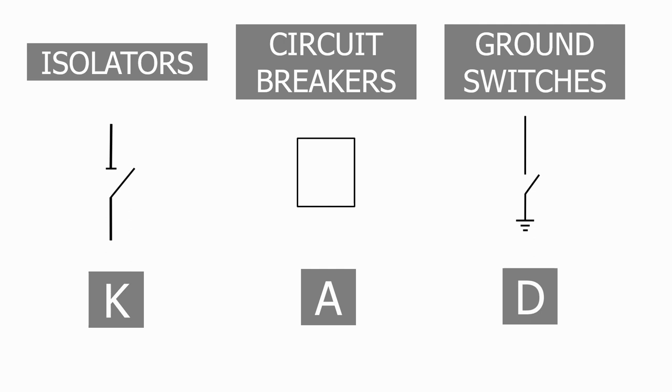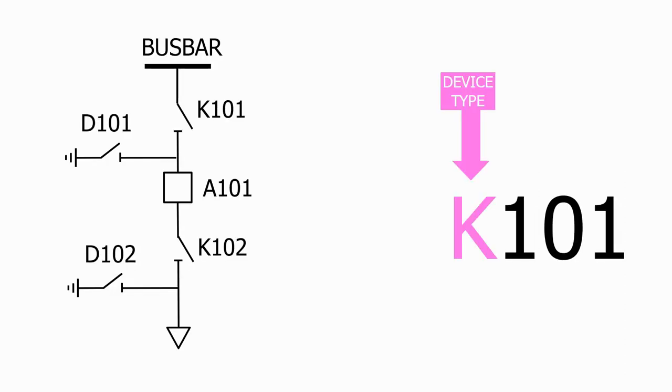Every piece of primary plant in a substation has a unique number, so that there is no confusion when circuits are being operated and maintenance being done. In the next few modules we will look at how these numbering schemes are developed and applied to some typical substation configurations.